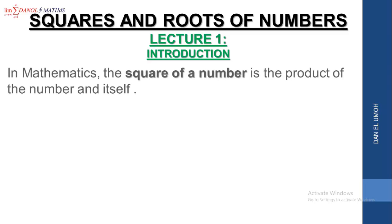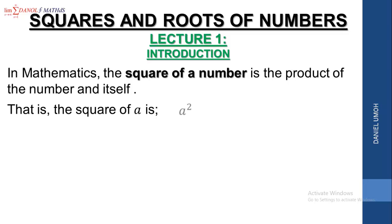In mathematics, the square of a number is the product of the number and itself. Whenever we talk about the square of a number, what we are simply saying is the product of the number and itself — that is, the multiplication of that number and itself. The square of a, denoted as a², is equal to a times a.